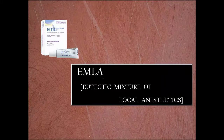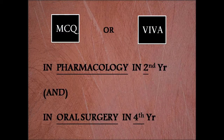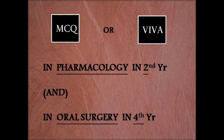Hello friends. In this video you will get to learn what is a eutectic mixture of local anesthetics, which is in short also known as EMLA. EMLA can be asked as an MCQ or sometimes as a viva question in the subject of pharmacology in the second year, and also in the subject of oral surgery in the final year. Hence it is important to know what is EMLA.